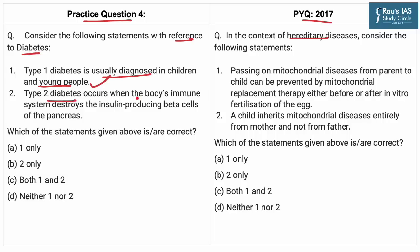Statement 2: Type 1 diabetes occurs when the body's immune system destroys the insulin-producing beta cells of the pancreas. This statement is incorrect — it is actually Type 1 diabetes in which the body's immune system destroys the insulin-making beta cells, while Type 2 diabetes results from the body's ineffective use of insulin. Type 2 diabetes occurs when the body does not produce enough insulin to function properly or the body's cells do not react to insulin, meaning glucose stays in the blood and is not used as fuel for energy. This type is often diagnosed in older people but is now frequent across all age groups.